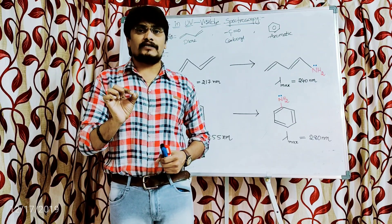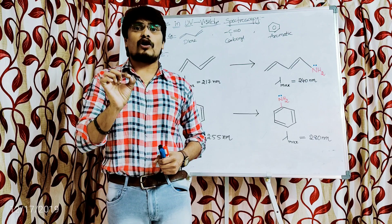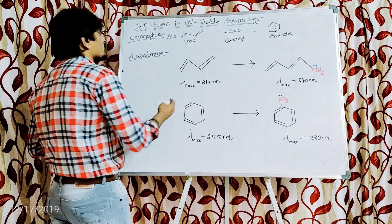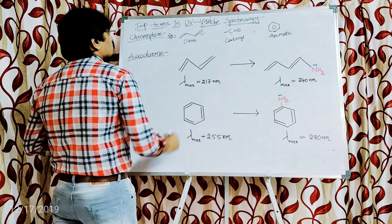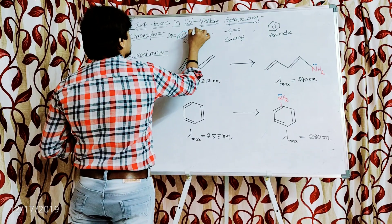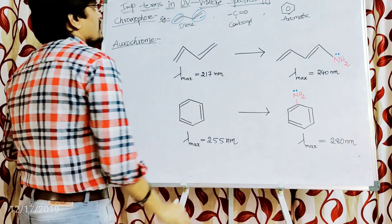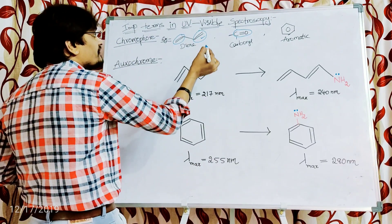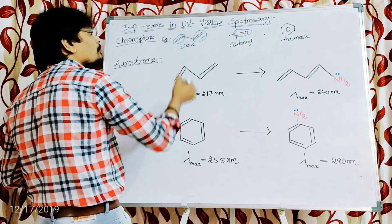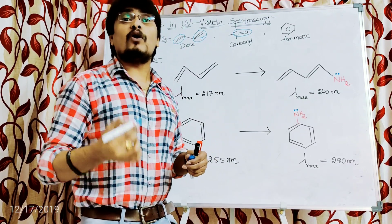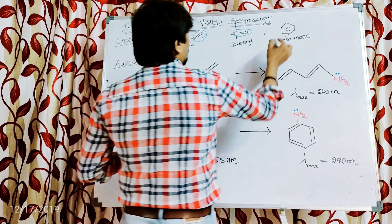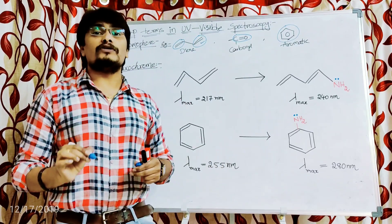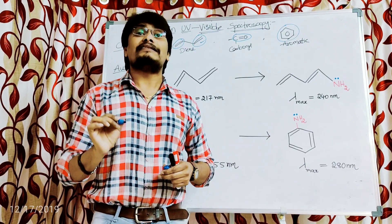Examples of chromophores are unsaturated moieties. For example, diene — we have to focus on unsaturated bonds. In carbonyl compounds, C=O is the chromophore which absorbs UV-visible radiation and imparts color to aldehydes and ketones. Benzene is also an example — since the whole molecule is unsaturated, it will absorb the UV-visible light.